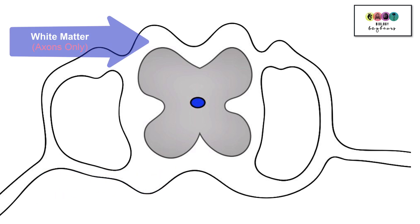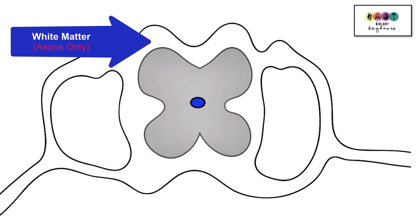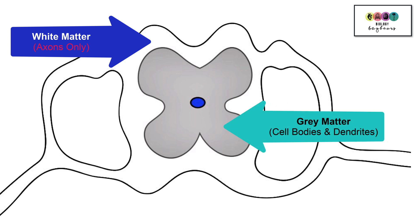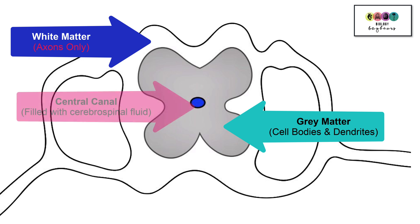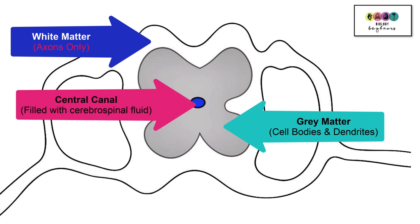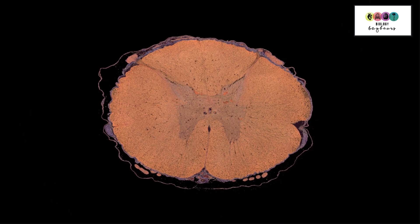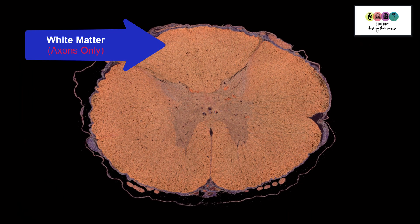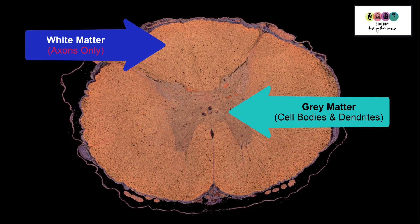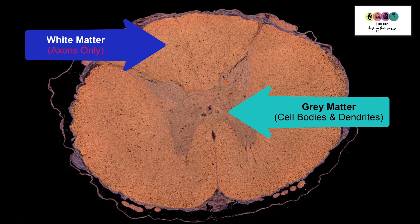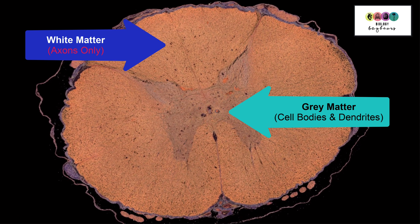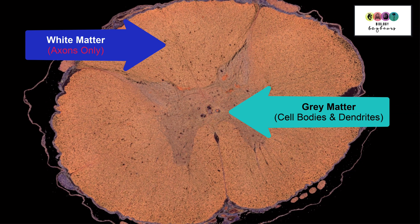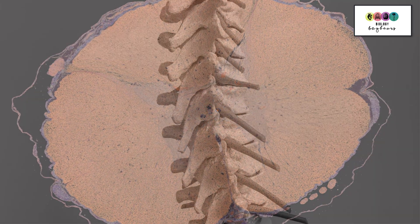This is a very simple diagram of the spinal cord. You can see the white matter — axons only make up the white matter. Grey matter contains cell bodies and also dendrites, and then you have that hole at the centre, the central canal, filled with cerebrospinal fluid. Remember, sometimes you may not get a diagram; you might be given a photograph, so it's important to have a look at the real thing. Here you can see the white matter and the grey matter — it looks a good bit like the diagram we've just drawn, but it's important to be really familiar with other diagrams and proper medical photographs.